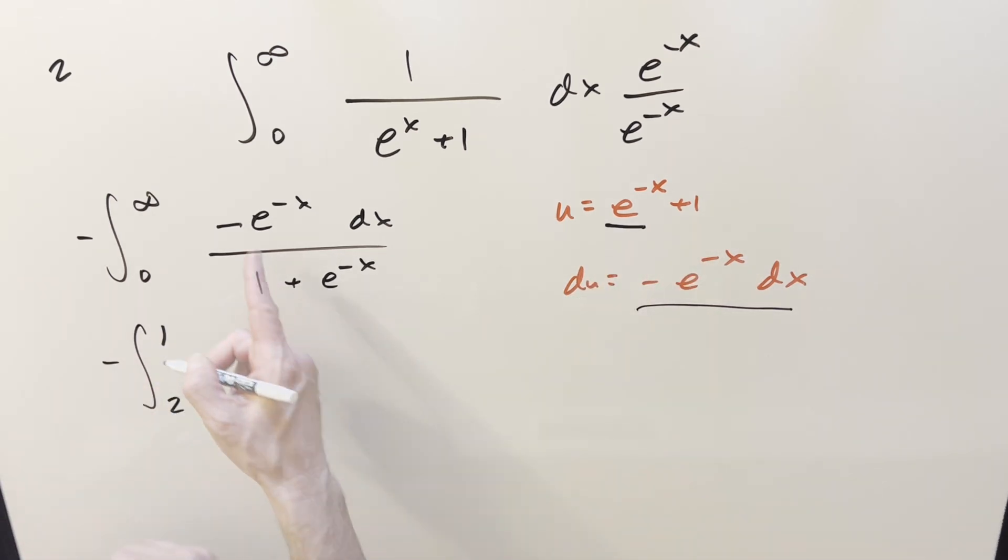And then our substitution is going to clean everything up because the whole numerator is du, and this is all going to be just u. Let's take this minus sign, and I can use it to flip the bounds. So we're going from 1 to 2. Go ahead and integrate. What we get is natural log absolute value.